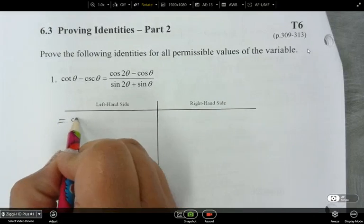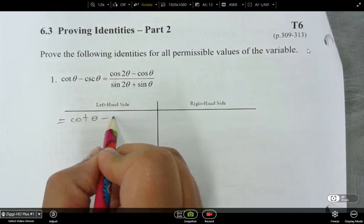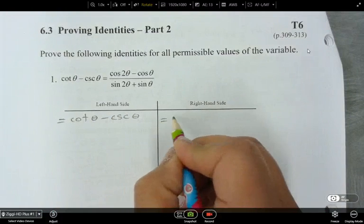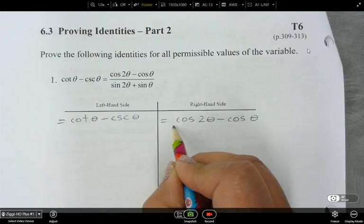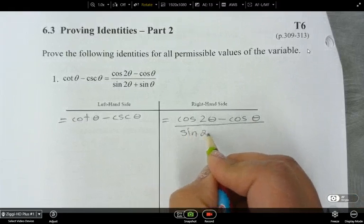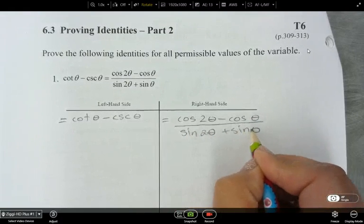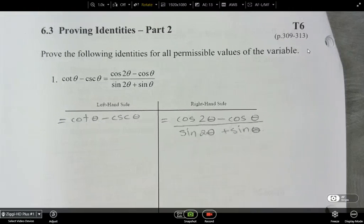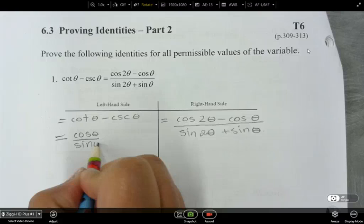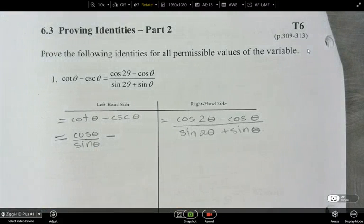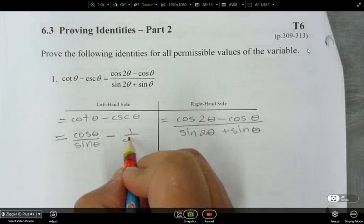All right, so our left-hand side is cotangent theta minus cosecant theta, and our right-hand side is cos 2 theta minus cos theta over sin 2 theta plus sine theta. Let's try to simplify the left-hand side. Cotangent we can recognize as 1 over tan, right? So why don't we just go straight to the sine-cosine version of it, which is cos theta over sine theta, and then cosecant is 1 over sine theta.